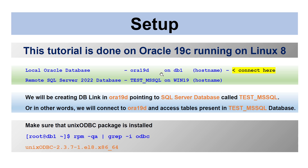I have a remote SQL Server 2022 database called test_msql running on Win19. DB1 is the hostname for Aura 19d, and Win19 is the hostname for test_msql. We will be creating a DB link in Aura 19d pointing to the SQL Server database called test_msql — connecting to Oracle and accessing tables present in that SQL Server 2022 database.